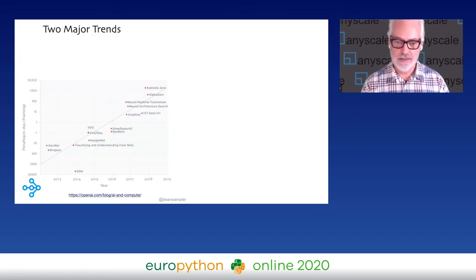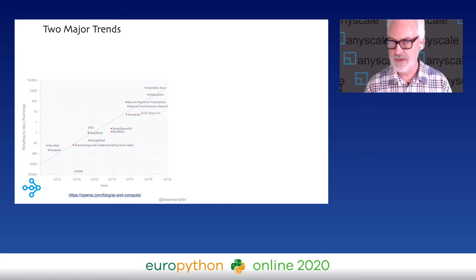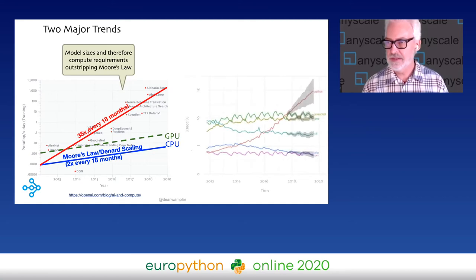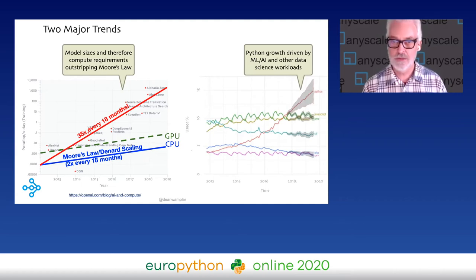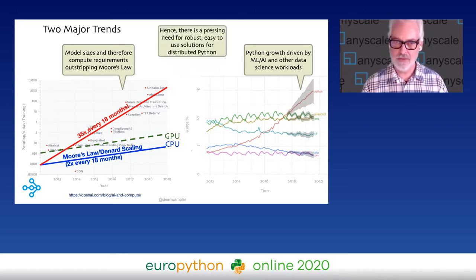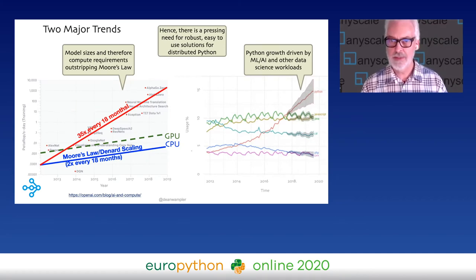So why Ray? It's emerged out of two big trends. One is that the size of neural networks is growing enormously, which also translates to how much compute is required to train them — we're far outstripping Moore's Law. At the same time, Python has seen enormous growth driven in large part by interest in machine learning and all the great libraries available. We really need an easy way to distribute Python over a cluster, but we want something that people who don't care about distributed computing can still do easily.